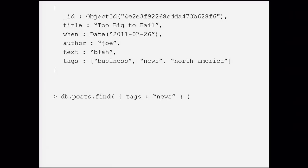The nice thing is you can reach into these documents and do queries. If this was a pure key-value store, you'd have a primary key pointing to a big JSON document as the value, but you couldn't reach into that — you'd lose a lot of semantic capability. But here you can. For example, this query says: find me all the blog posts which have a tag that is 'news.' That's a pretty compact representation of that query.